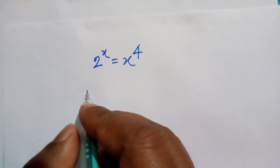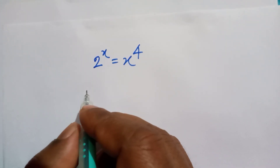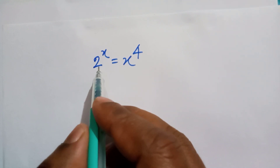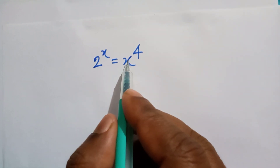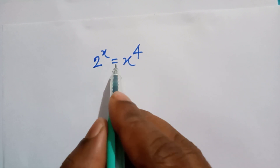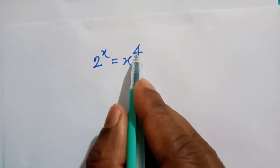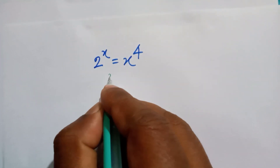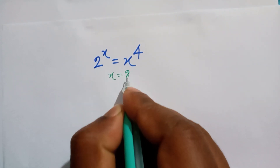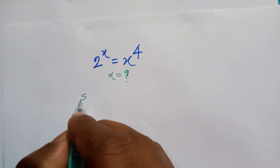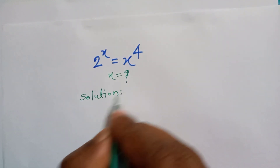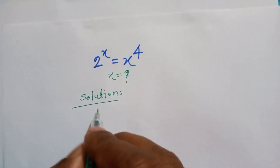Hi everyone, welcome back to my channel Math Points. Today we have an exponential equation: 2 to the power x is equal to x to the power 4. Then x is equal to? Let's find the solution.